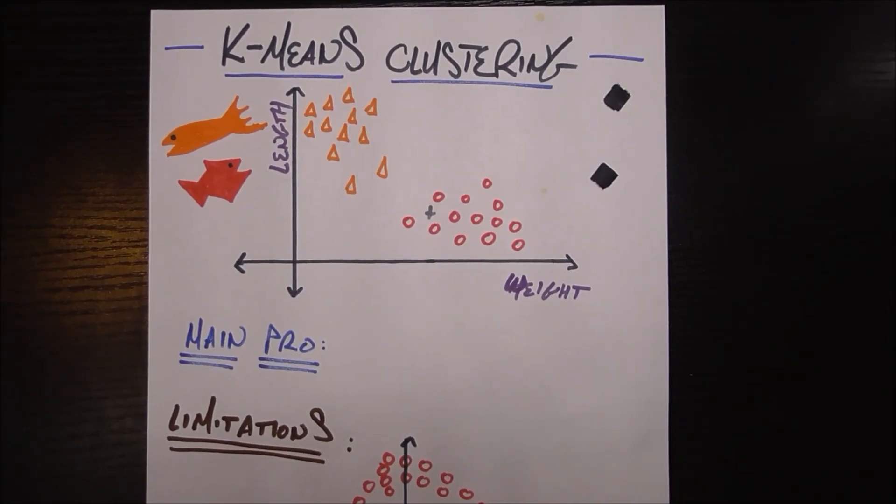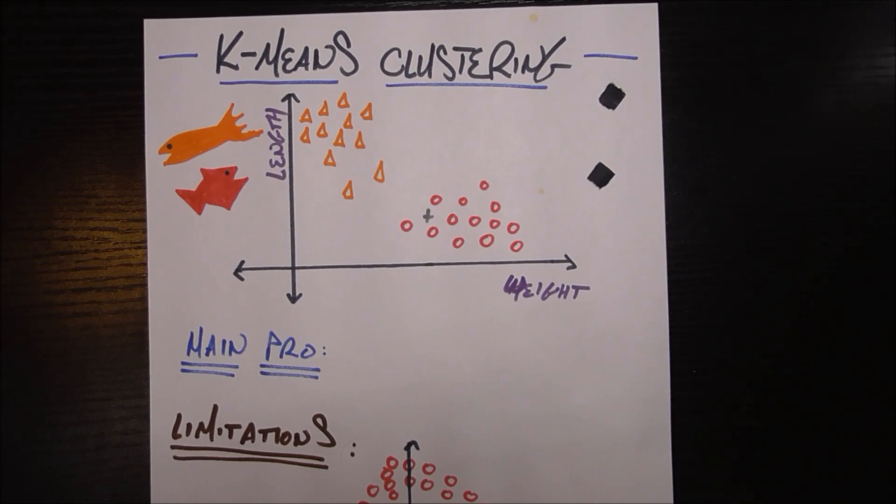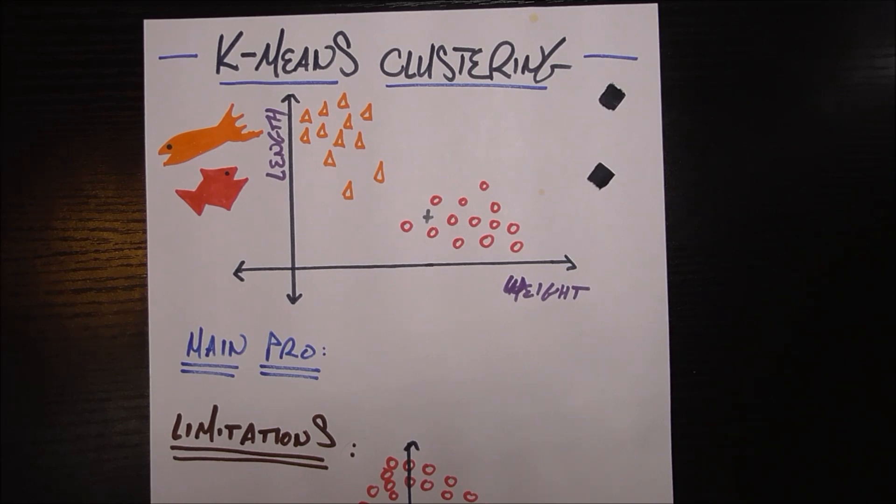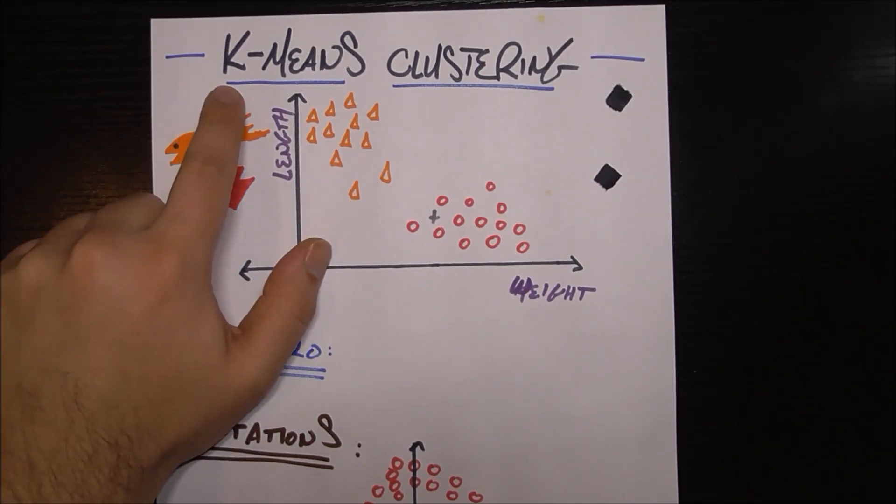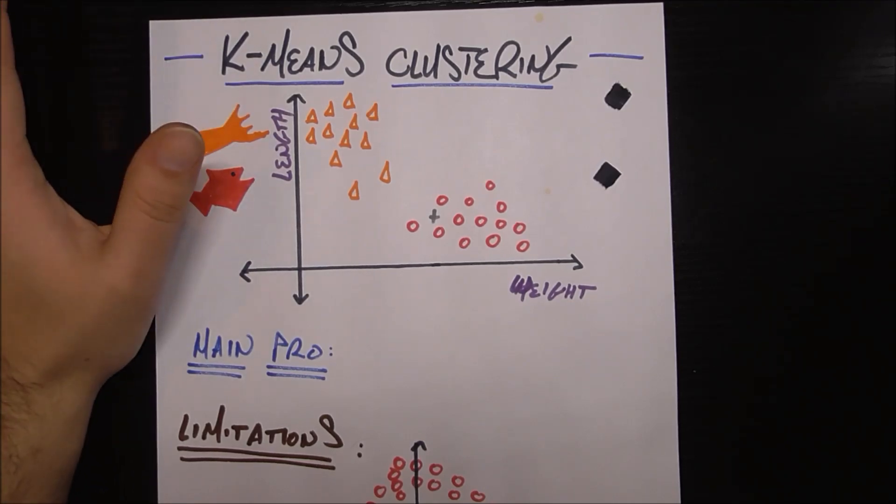In this video, we'll be talking about a type of machine learning algorithm called k-means clustering. The goal of k-means clustering is to classify some mystery point based on information about it into one of k classes.